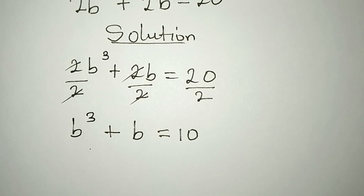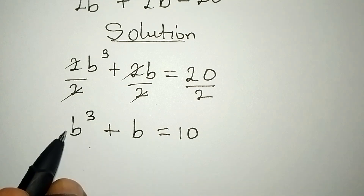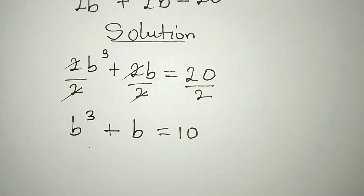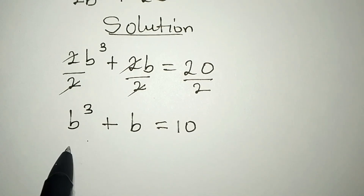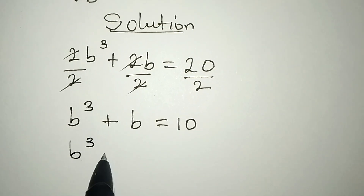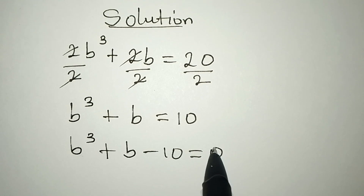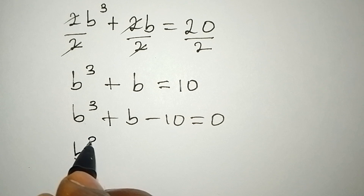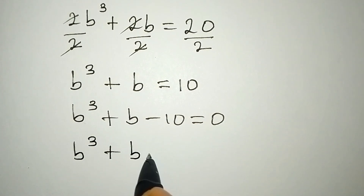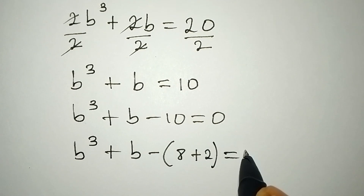From here, you might be tempted to factor out b, but that will not give you the right answer. So we bring the 10 to the left: b to the power of 3 plus b minus 10 equals 0. Then we rewrite the 10 as 8 plus 2: b to the power of 3 plus b minus (8 plus 2) equals 0.